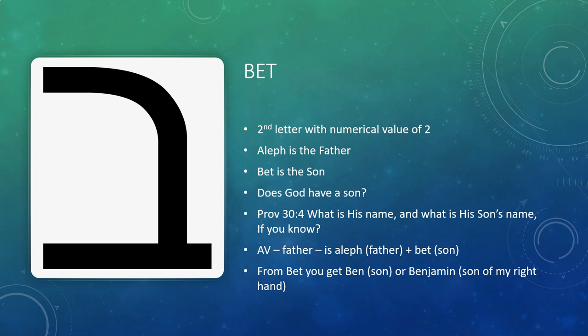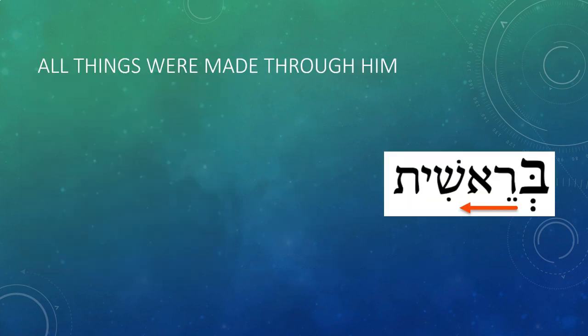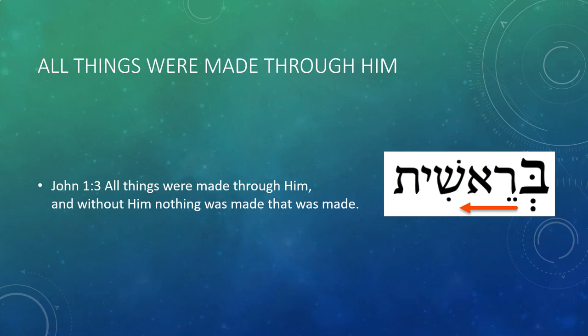From the letter Bet you get words like Ben, meaning son, or Benjamin, son of my right hand. If you were to begin reading the Bible in Hebrew, the first letter of the Bible is the letter Bet. Many Jewish rabbis have debated this and wondered why would the Bible begin with the second letter of the Aleph Bet? Why doesn't it begin with the first letter — Aleph — which has all these links to Almighty God, to Adonai, to Abba Father?